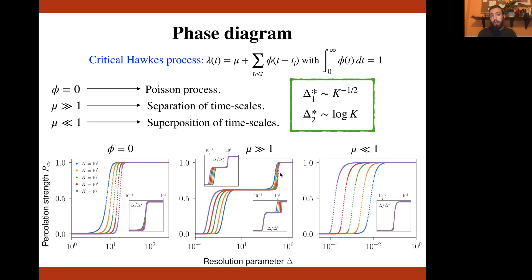And indeed, we find two different percolation transitions, which intuition suggests that the first must be related to having merged the events that belong to a single excitation, to a single burst. And then the second must be due to having merged different bursts. It's not by chance indeed that the second transition point is scaled exactly as the transition point of the standard Poisson process.